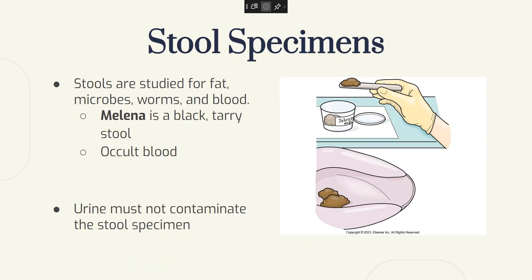Stools are studied for fat, microbes, worms, and blood. Melena is black tarry stool. Occult blood is when the blood is hidden and you can't see it with the eye. It's important to make sure that urine does not contaminate a stool specimen. Ulcers, colon cancer, and hemorrhoids are common causes of bleeding. Often blood is seen if the bleeding is low in the bowels. Stools are black and tarry from bleeding in the stomach or upper GI tract. Bleeding may be in very small amounts, so the stools are tested for occult or hidden blood.